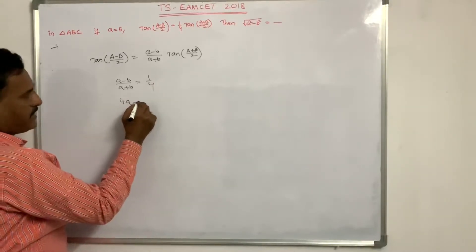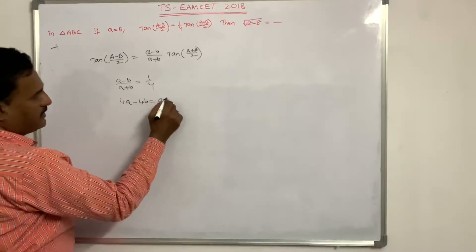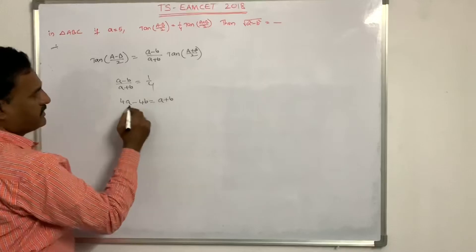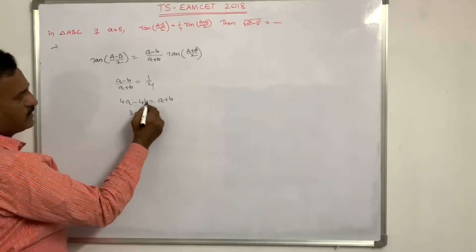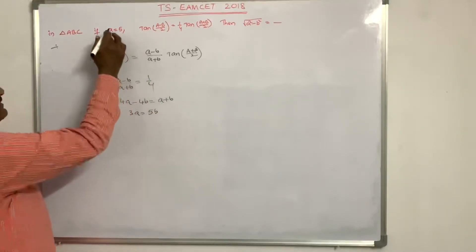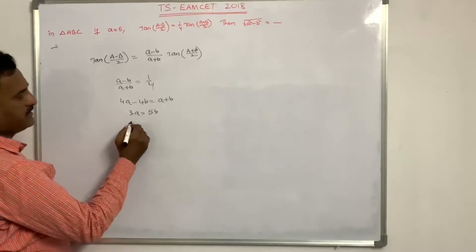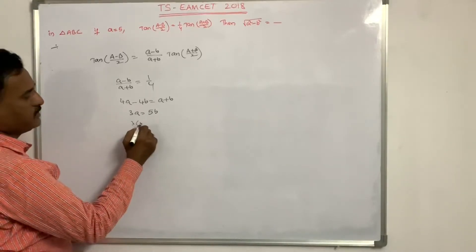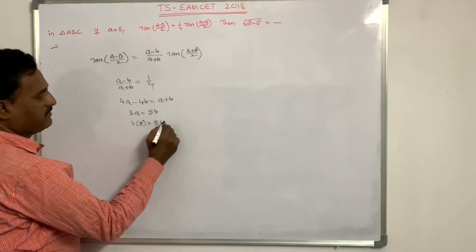From (a−b)/(a+b) = 1/4, we get 4a − 4b = a + b, so 3a = 5b. Since A = 5, substituting: 3×5 = 5b.